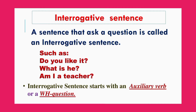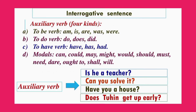An interrogative sentence starts with an auxiliary verb or WH-question words. Auxiliary verbs are of four kinds. Number one: to be verb — am, is, are, was, were. Number two: to do verb — do, does, did. Number three: to have verb — have, has, had.